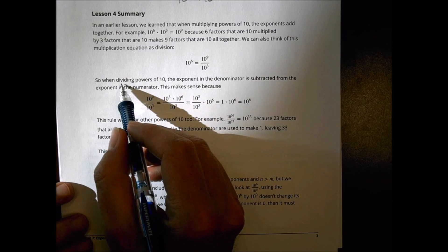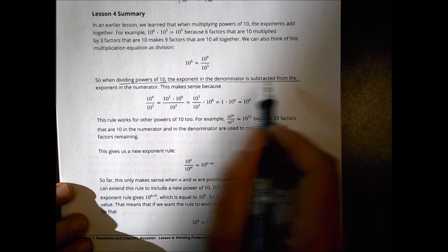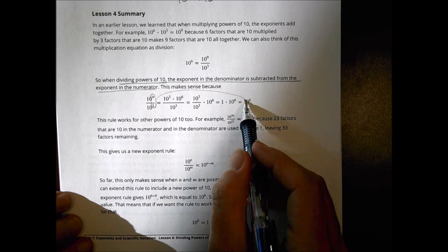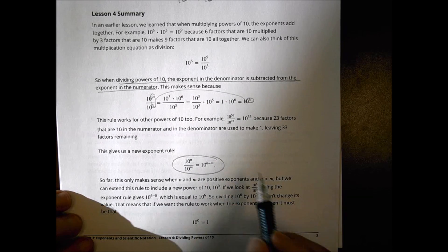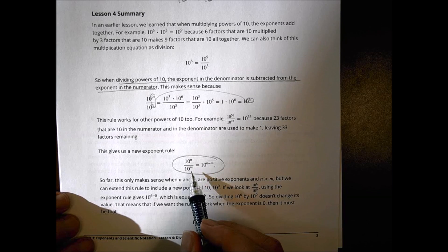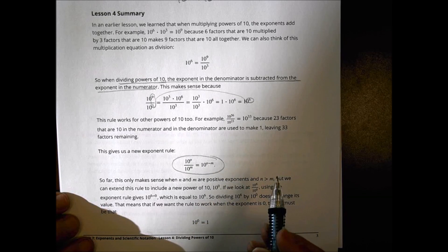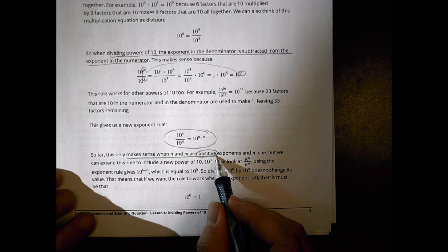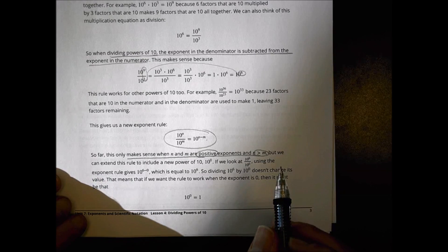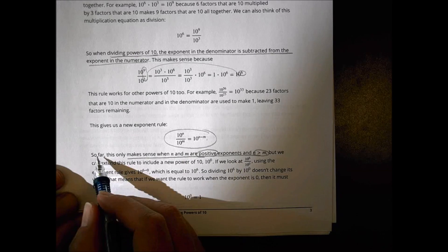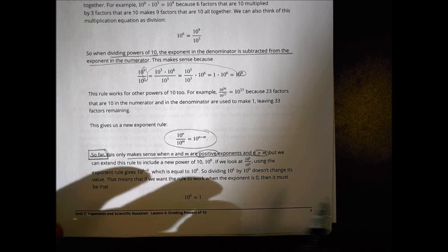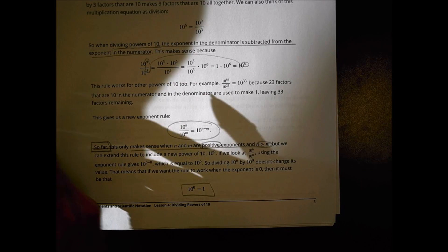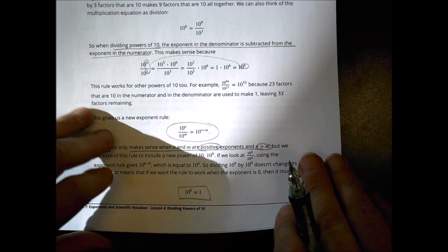So in summary today, when we divide powers to ten, the exponent of the denominator is subtracted from the exponent of the numerator. And that was a big thing here. So nine and three becomes nine minus three to get me to the sixth right there. So it gives us a new exponent rule of ten to the n divided by ten to the m equals ten to the n minus m. The other thing we have to keep in mind is that it only makes sense when n and m are positive exponents and n is greater than m. But we can extend the new rule so far. But we do have this new rule that ten to the zero power is going to be equal to one. All right. So pause there. Start working on your homework and then press play in a moment to see how you did.